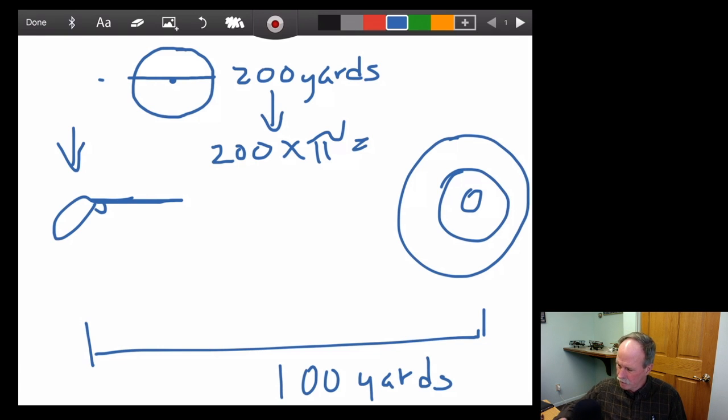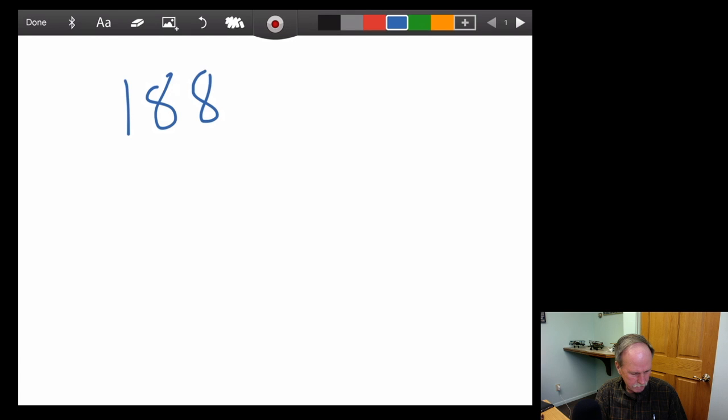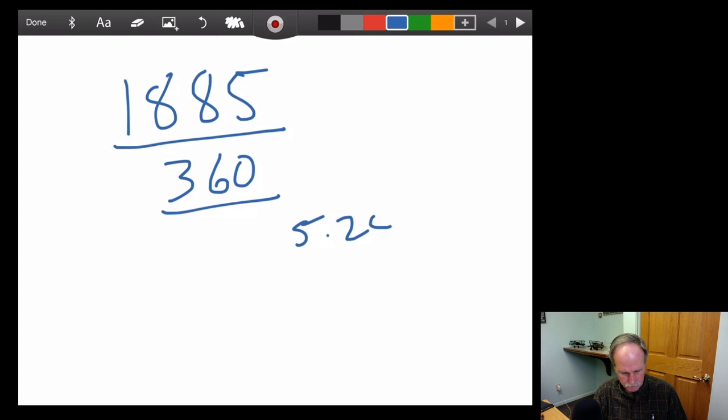And we can do the math on that real quick. I probably should have had that out. Let's go ahead and pull the math up. So 200 yards times 3 is 600 feet times 3.14159 is pi. So that means that the circumference of this circle is 1885 feet. So we've got 1885 feet.